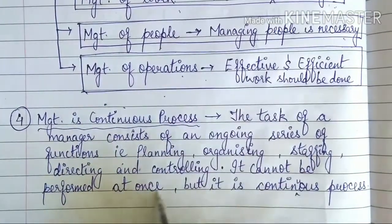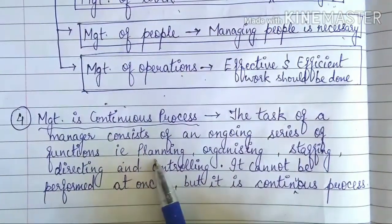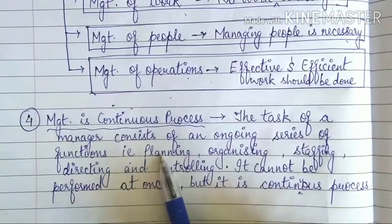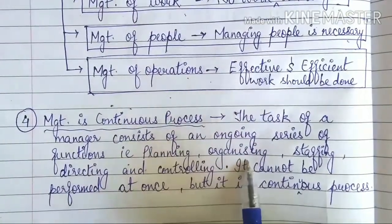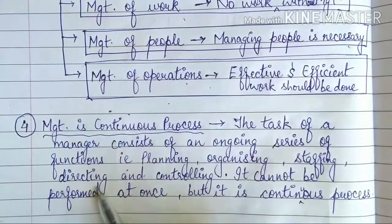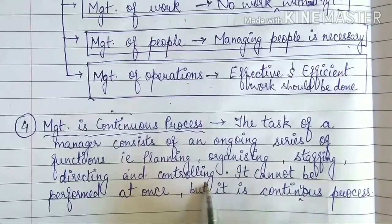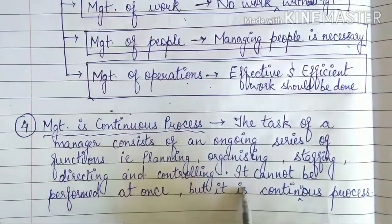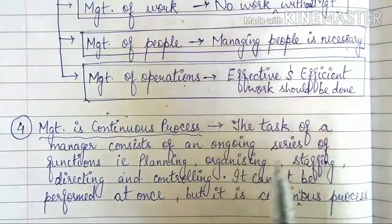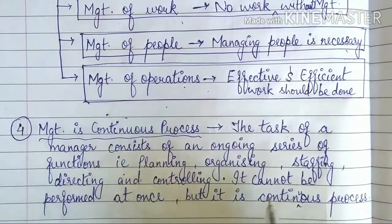These functions cannot be performed all at once — it is a continuous process. The primary functions are: first, planning; then organizing all the materials and resources; then staffing; then directing all the employees; and finally controlling the work of the employees. All these five primary functions are followed to continue the functioning of any organization.